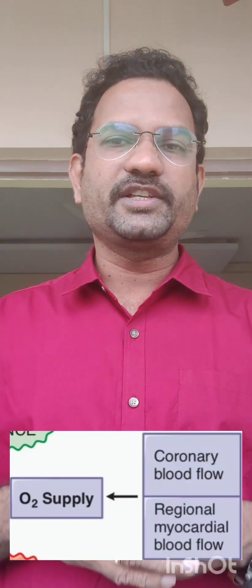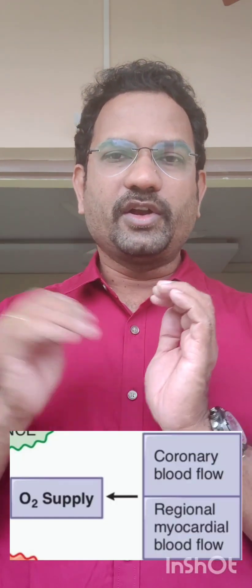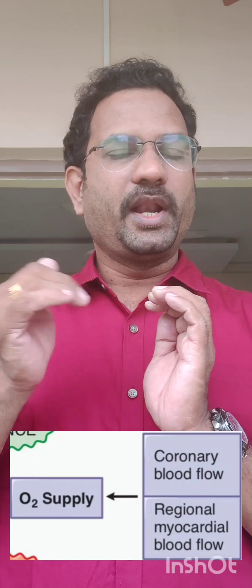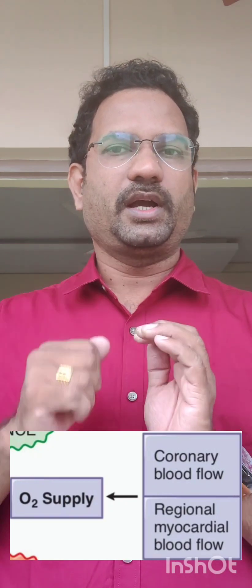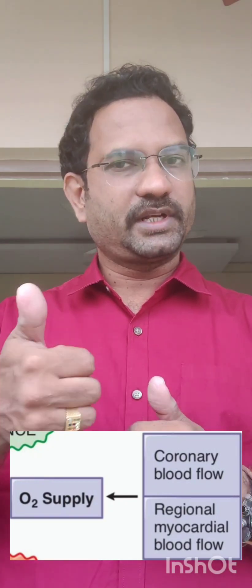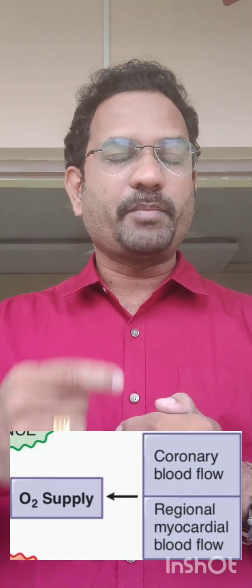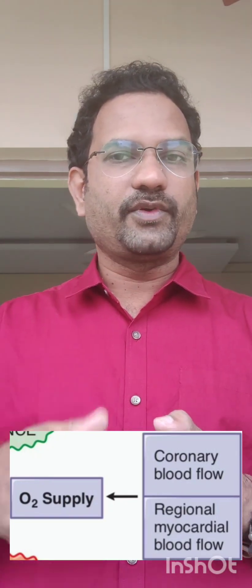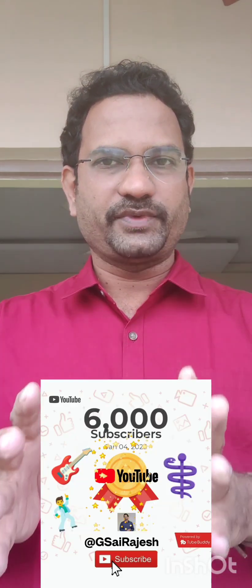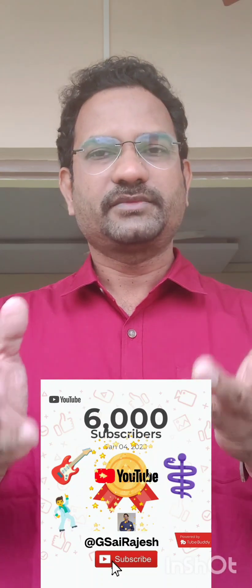Now, oxygen supply — how is oxygen supply made? Coronary blood vessels supply blood to the heart. When coronary blood flow is increased, or regional myocardial blood flow is increased, blood supply to the heart is increased. So this is about angina pectoris pathophysiology.